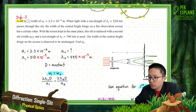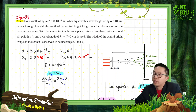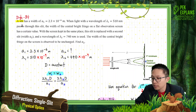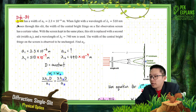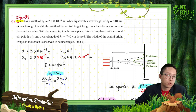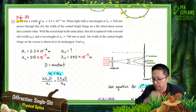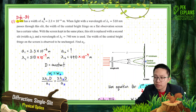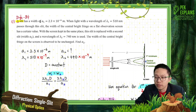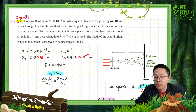This is the first thing we need to know — this is a question about single slit. A slit has a width of A1. He gives you A1, the width, the size of the slit. When light of wavelength — you have lambda 1.